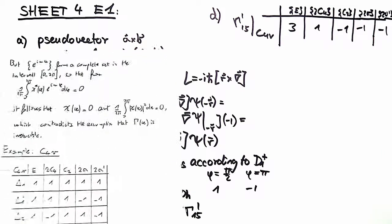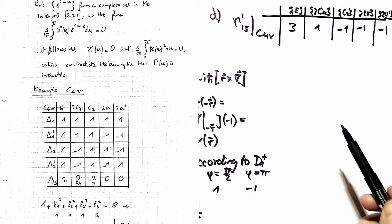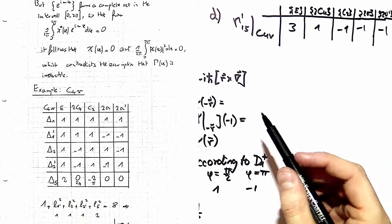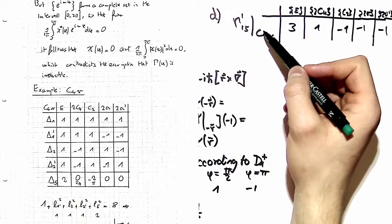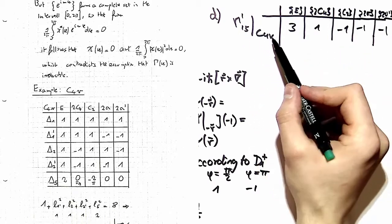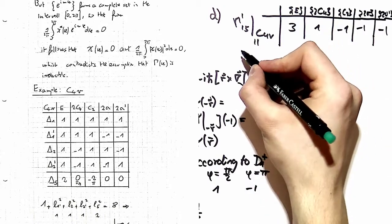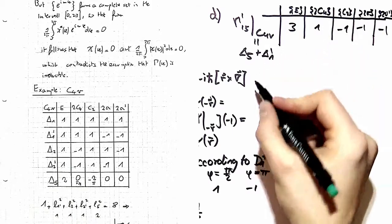The next thing you do is look at the character table of C4v. You find that on page 42, and you can see how the gamma 1 5 prime representation decomposes in the presence of C4v symmetry. We use the decomposition theorem to see that this is indeed delta 5 and delta 1 prime.